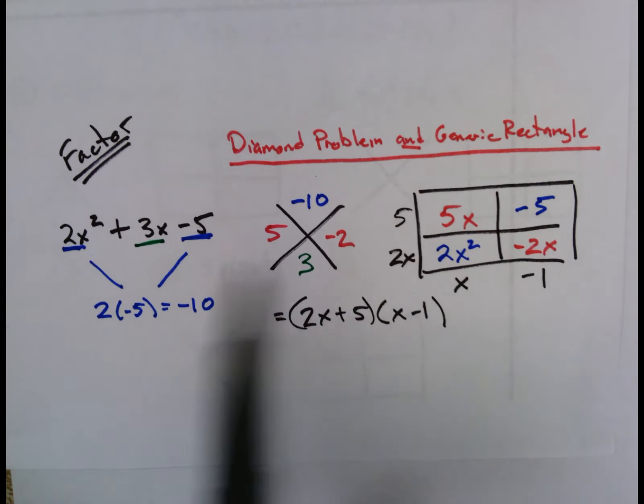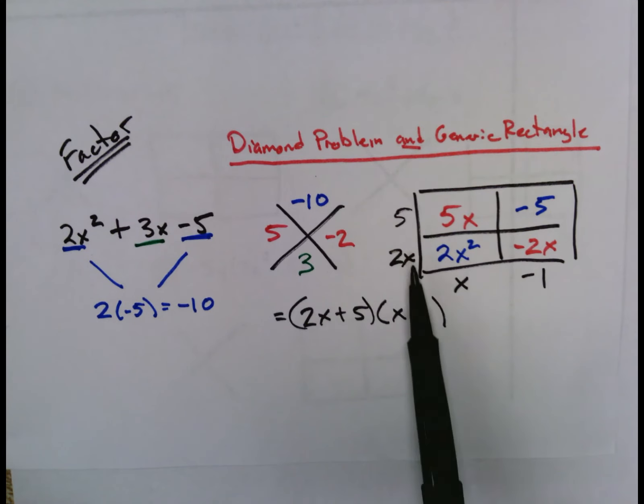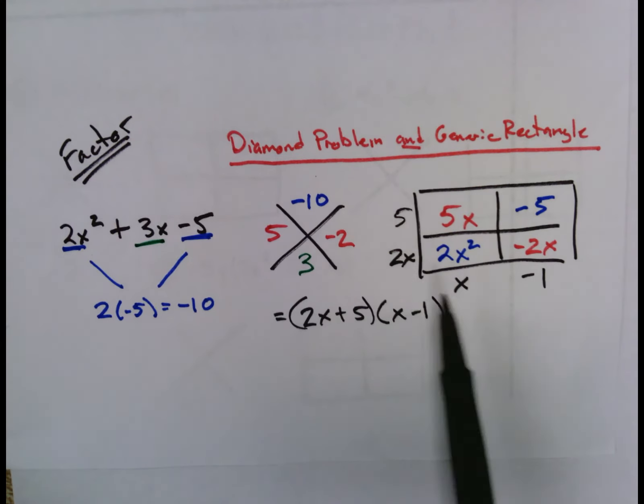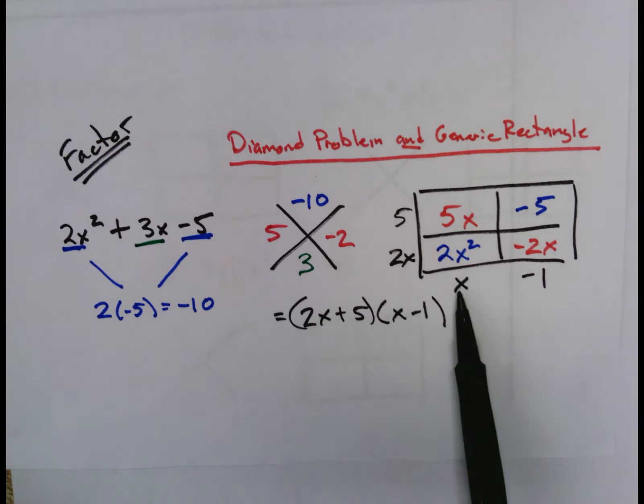And then your work to actually factor this expression is to try to find out what the dimensions are of that generic rectangle. So I can pull a 2x out of 2x² - 2x, so this has to be an x at the bottom.